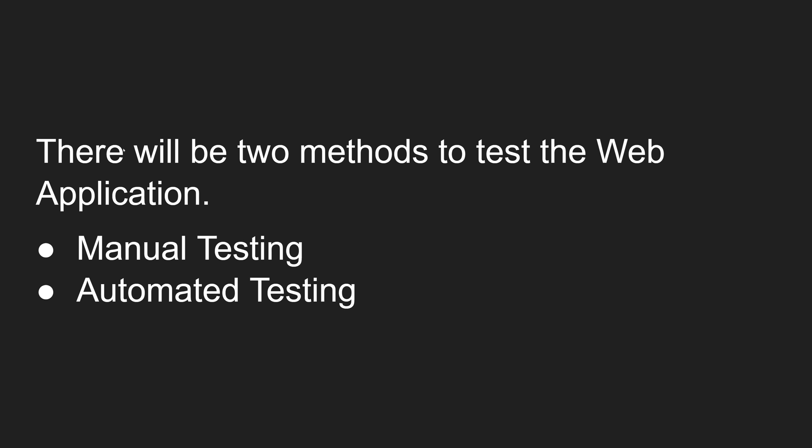This comparison of actual behavior to expected behavior is done using two methods. There are two methods to test a web application or any computer software: the first is manual testing and the second is automated testing. These are the two ways we do testing.